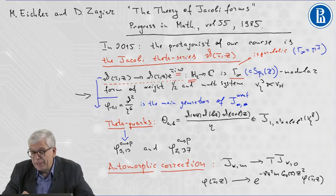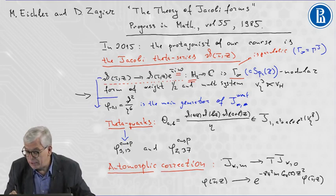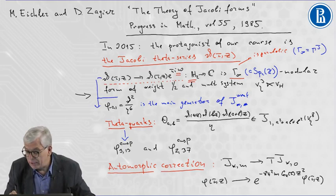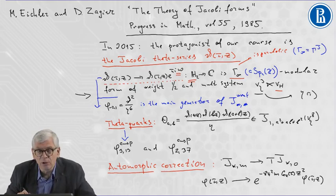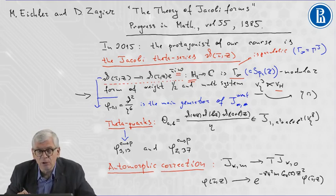And with respect to the multiplier system V eta cube, certainly this is the multiplier system of the Dedekind eta function, times the binary quadratic character of the so-called Heisenberg group.